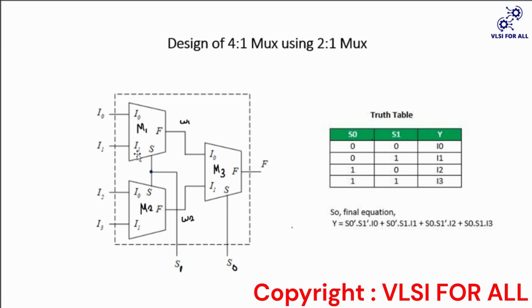I will explain its operation by taking one example. Suppose if we want i1 as output, then we have to take s0 as 0 and s1 as 1. If s0 is 0, it selects m1. Then it looks for i0 and i1: if s1 is 0 it gives i0 as output, if s1 is 1 it gives i1 as output. As we want i1, s1 should be 1, so i1 will be the final output.